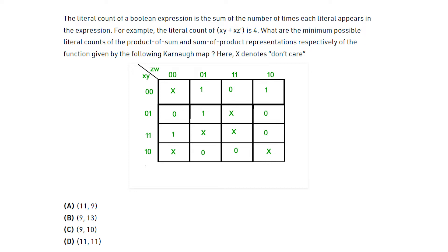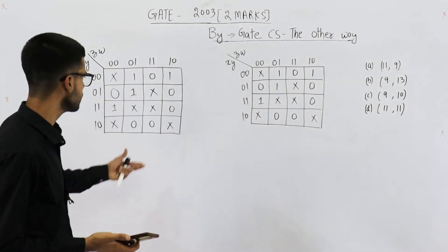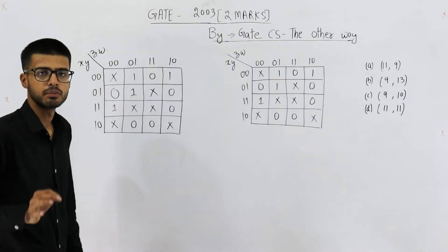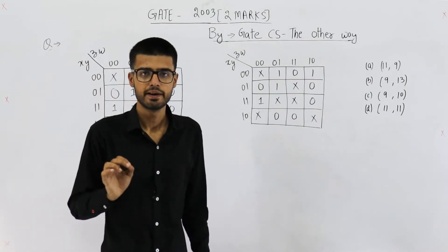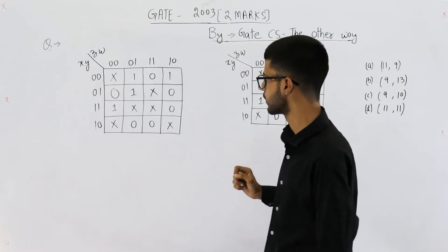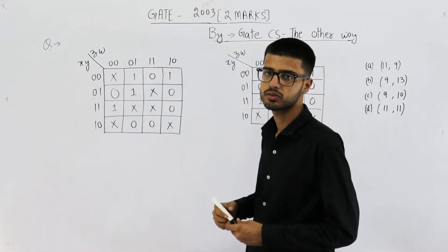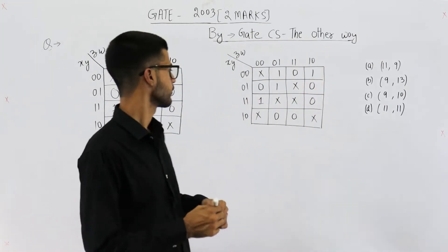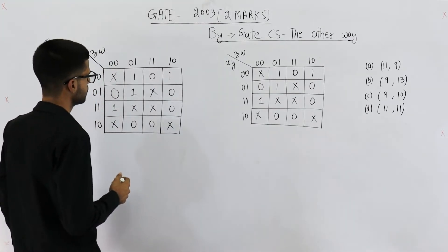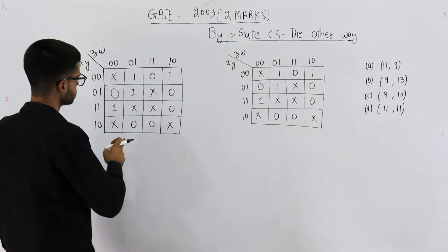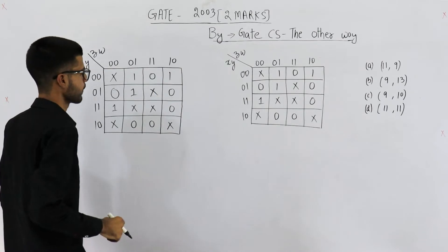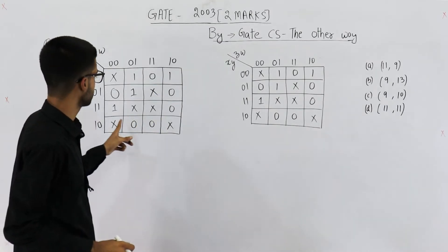You can just have a look at this K-map. I've drawn it here. Now we need to determine the minimal SOP and POS. Rather, we don't need the exact expression, but we need the literal count. For that, let us group all the ones first. That means let us try to find out the minimal SOP. You can see, we have a one here. Let's start from this one.